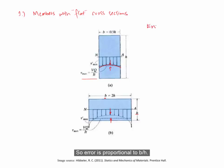Error is proportional to b over h. The top cross-section has a b over h ratio of 0.5, and this corresponds to an error of about 3%.